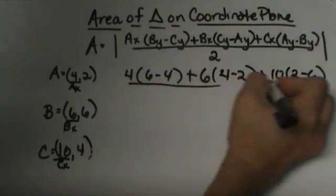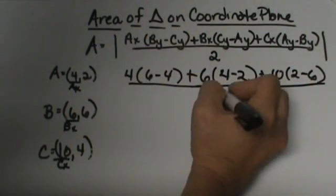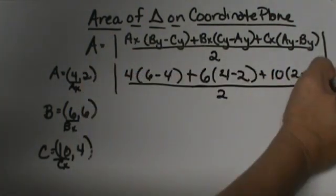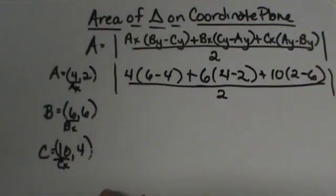Then I'm going to get the sum of all that and divide it by 2 and take the absolute value. So now let's crank this out. Now it's just simplifying.